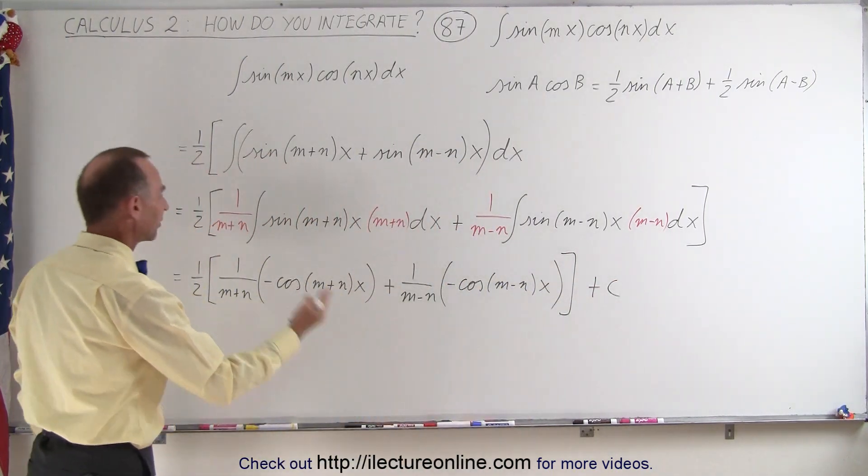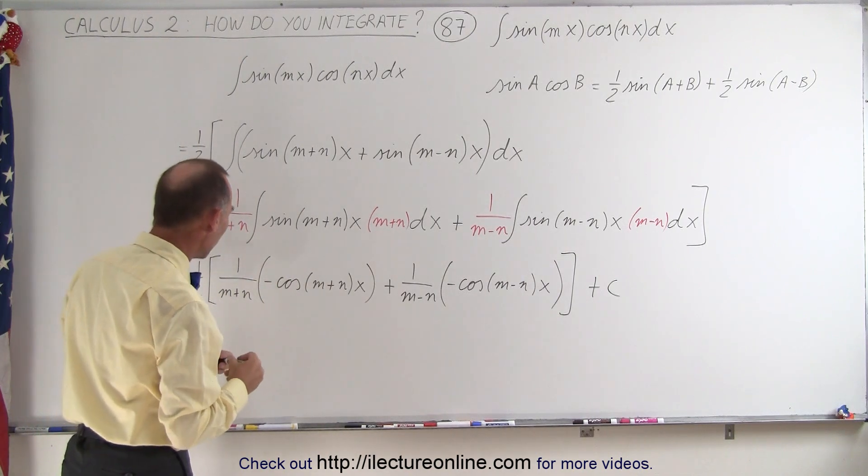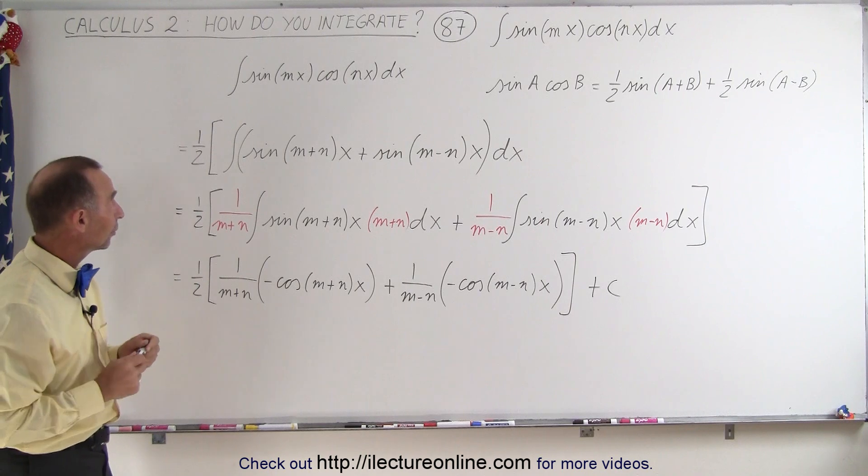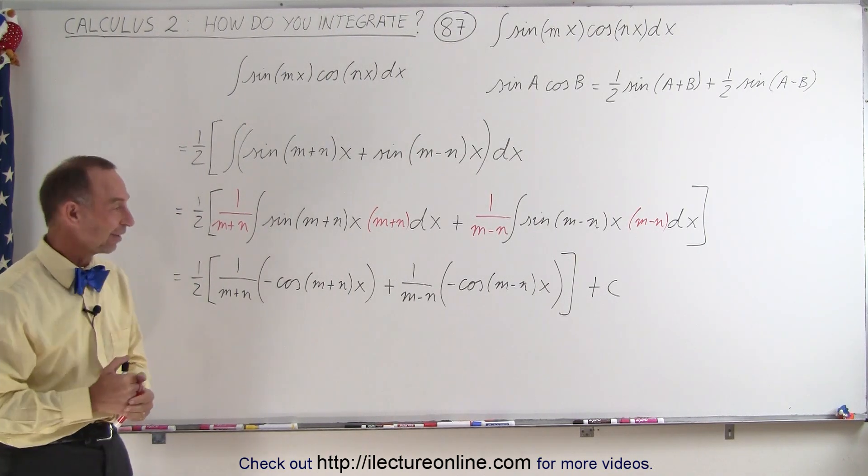We could potentially factor out a minus sign, or we can leave it like that. Either way, that is the result when we integrate the sine of mx times the cosine of nx. And that's how it's done.